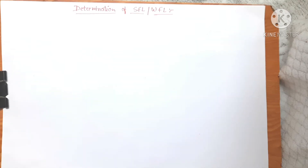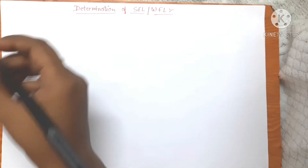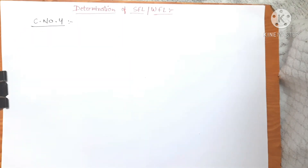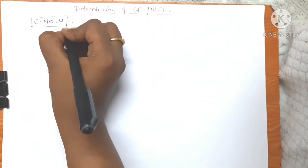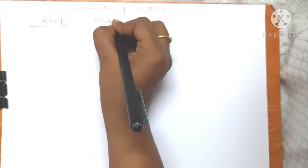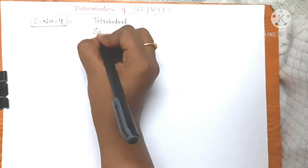Hi everyone, welcome to Netgate Chemistry. In this video on coordination chemistry, we are going to discuss the determination of strong field ligands and weak field ligands in case of coordination number four. In the previous video, we already discussed the nature of ligands for coordination number six. Today we discuss coordination number four, which involves two types of geometries: tetrahedral and square planar.